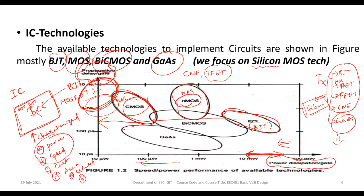Gallium arsenide, a non-silicon-based technology, also has less delay and manageable power consumption. However, people do not widely use gallium arsenide because its cost is very high. Silicon is abundantly available and very cheap, whereas gallium arsenide chips are very expensive by comparison.